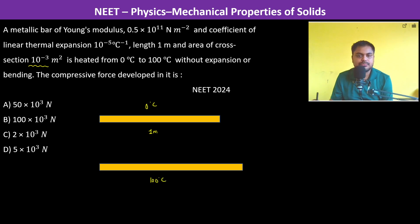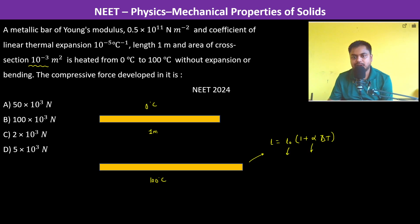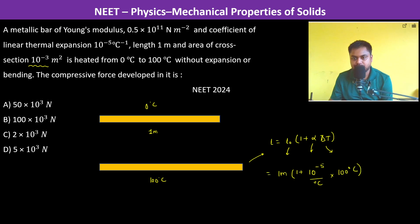At 100°C, the bar's length is supposed to be L = L₀(1 + αΔT), where L₀ is the initial natural length, α is the coefficient of linear expansion, and ΔT is the change in temperature. So L = 1 meter × (1 + 10⁻⁵ per °C × 100°C).